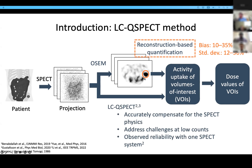Thus, in our previous work, based on the idea first proposed by Dr. Carson, we developed a low-count quantitative SPECT method, in short the LCQ-SPECT method, to estimate the original uptake directly from the SPECT projections. The method was designed to accurately compensate for SPECT physics and address challenges at low counts, and has been observed to yield reliable regional uptake estimates with a single SPECT system.